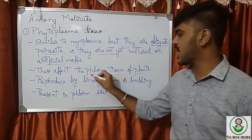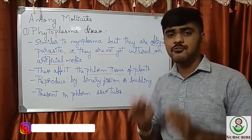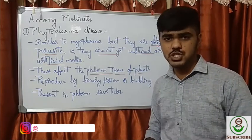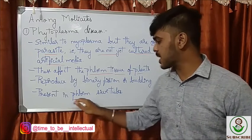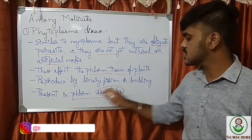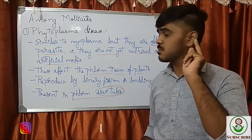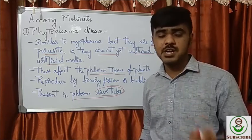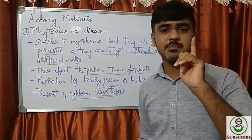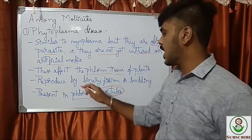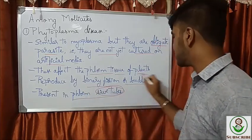Phytoplasmas affect the phloem tissues of the plant, and they are mainly present in sieve tubes. Remember: phytoplasma — phloem — sieve tubes. Reproduction is by binary fission and budding.